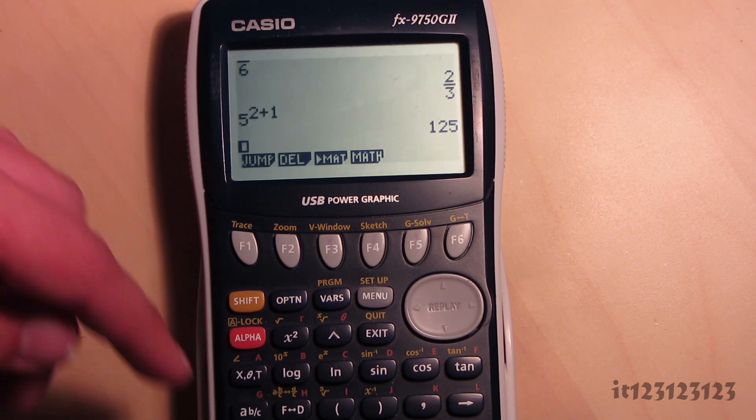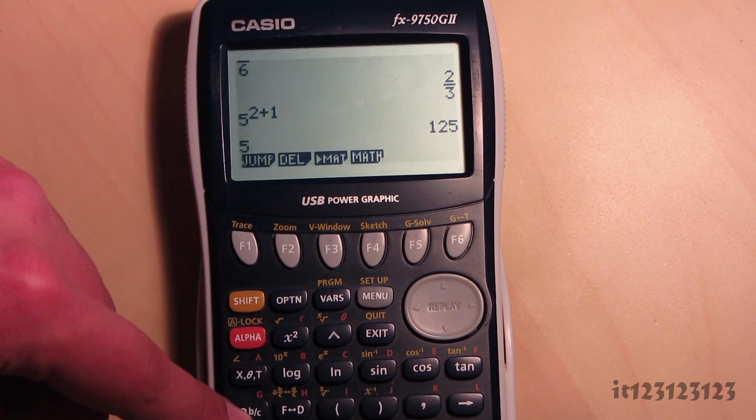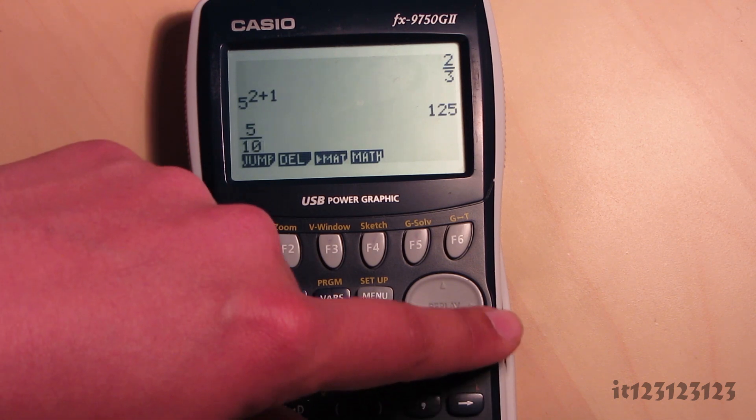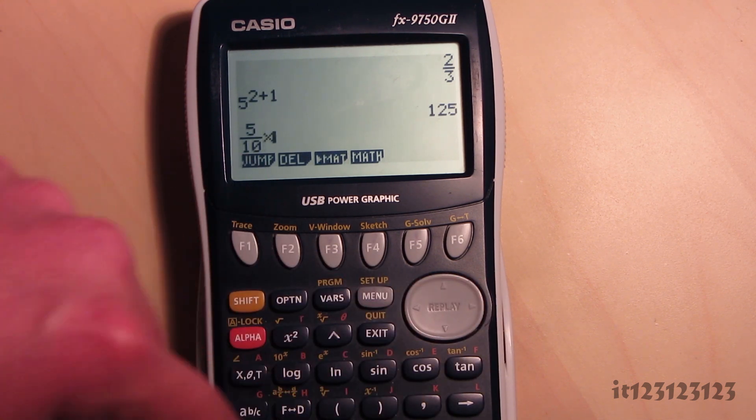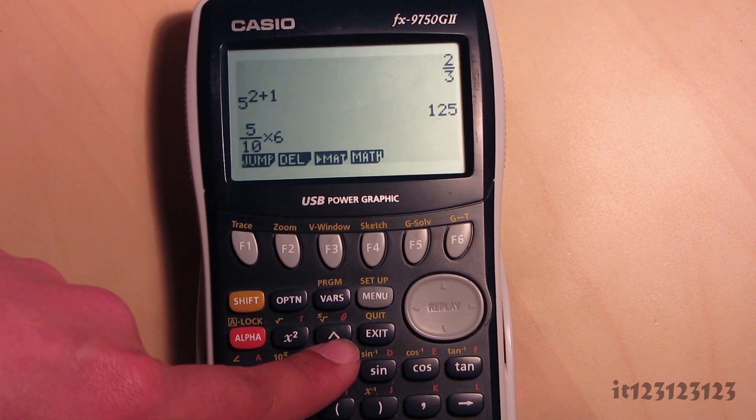Now you can combine all of these things together. So we can have 5 over 10 times 6. And this button here is the to the power of.